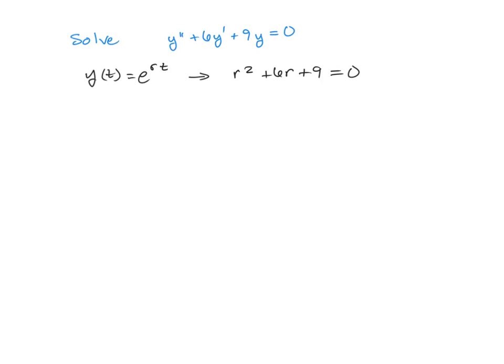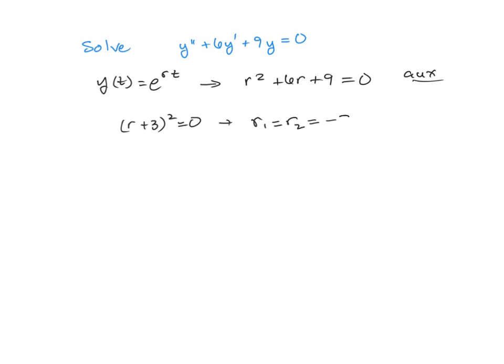And again, that is our auxiliary equation. So now this one factors very nicely as just r plus 3 squared equals 0. So that tells us that we have our r1 and our r2 be exactly the same. They're both negative 3.